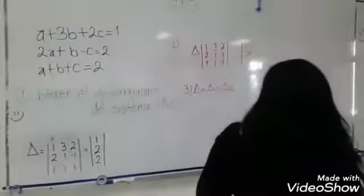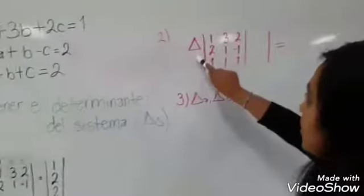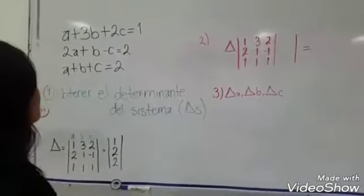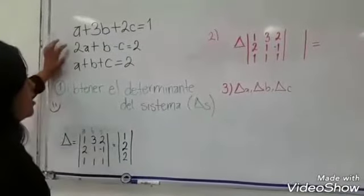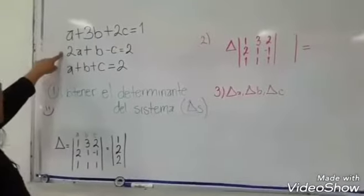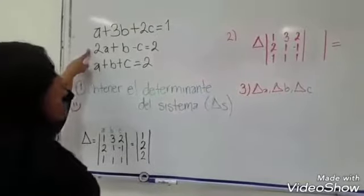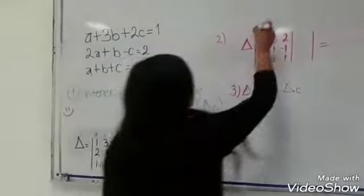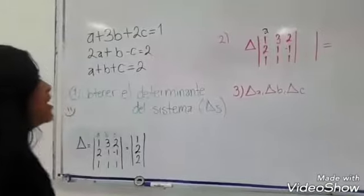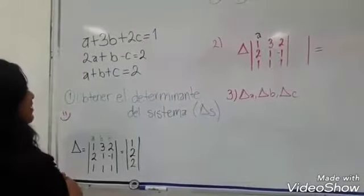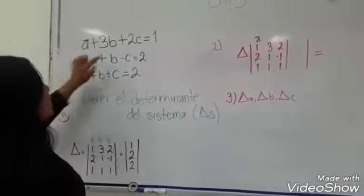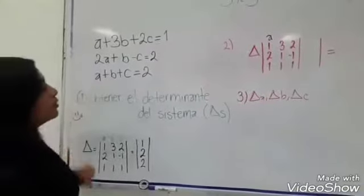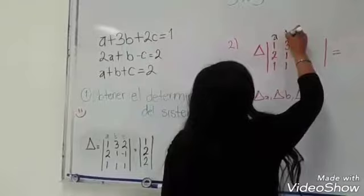El paso 2 sería acomodarlos. Como pueden ver, aquí ya está el determinante. El valor de A es 1, aunque A no tenga el número 1, por lógica sabemos que vale 1. Después seguimos con la otra A: el valor es 2 y se coloca aquí. El valor de la tercera A es 1. Estos son los valores de la variable A. Para sacar los valores de la variable B hacemos lo mismo: B vale 3, B vale 1, B vuelve a valer 1.